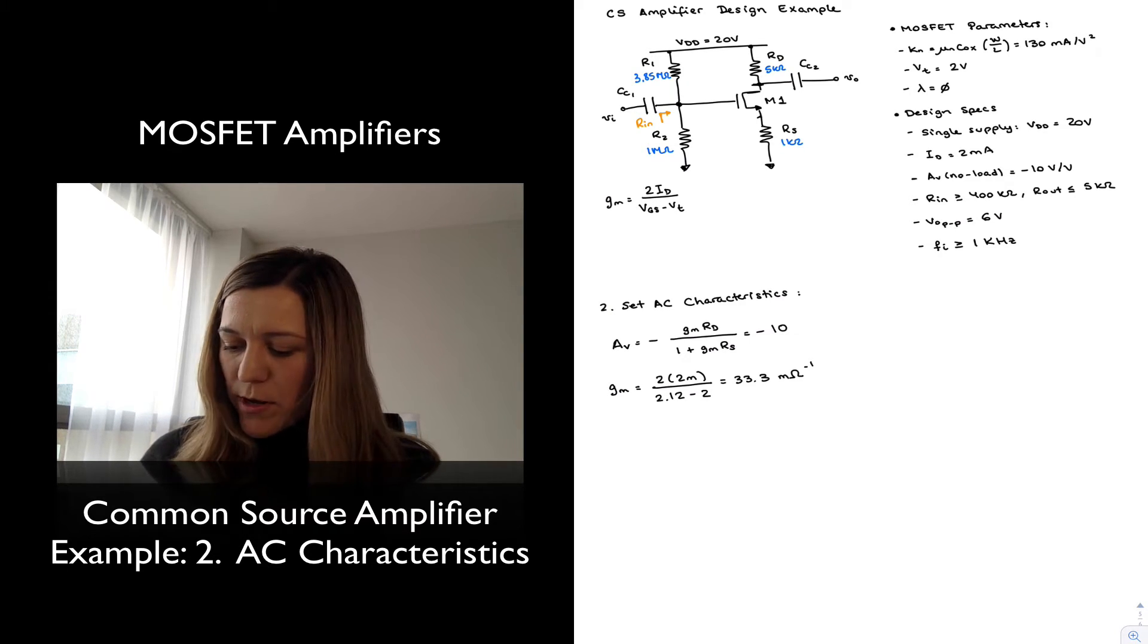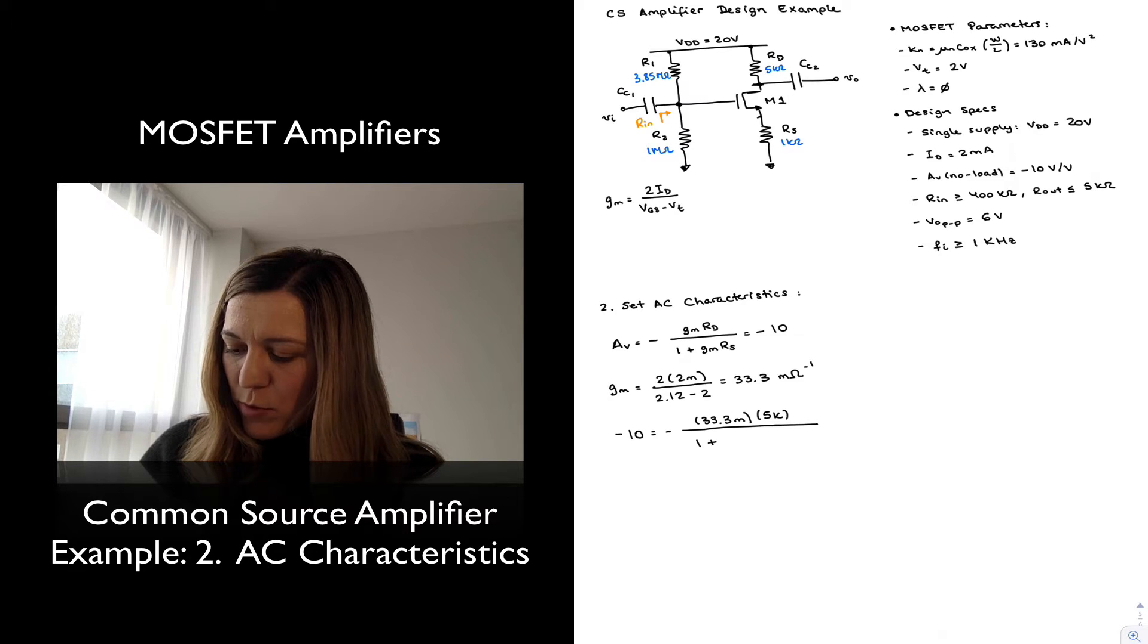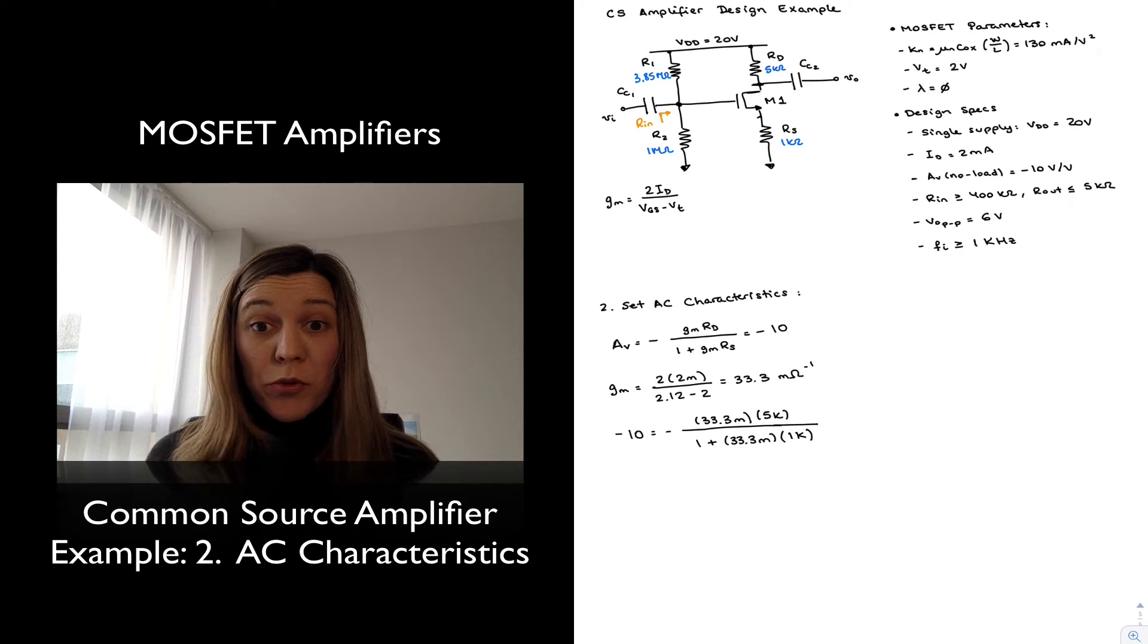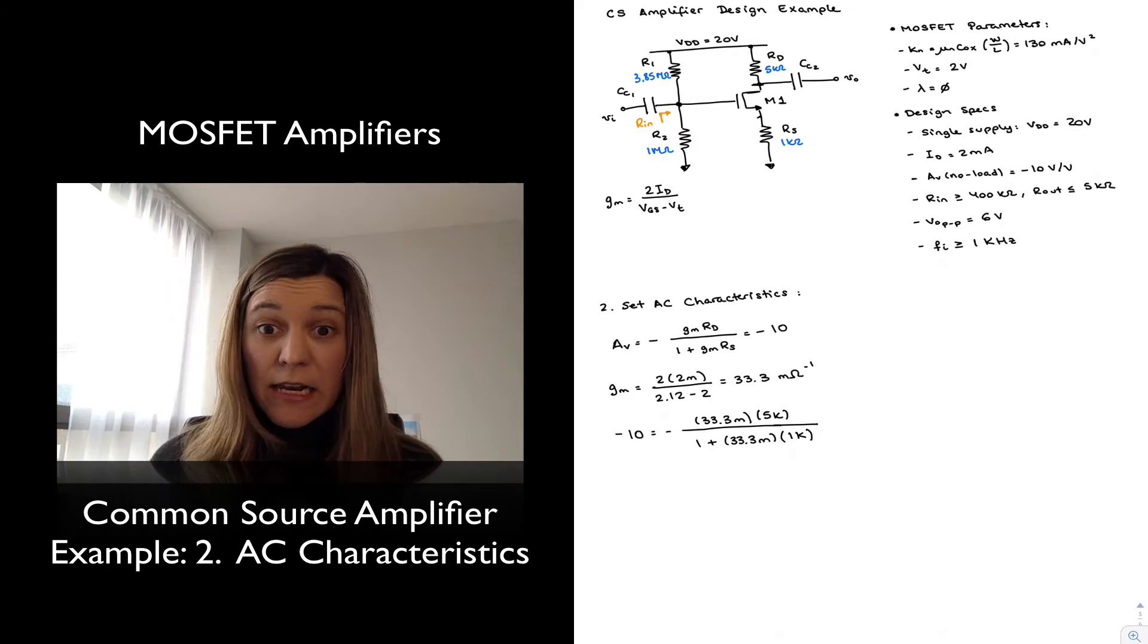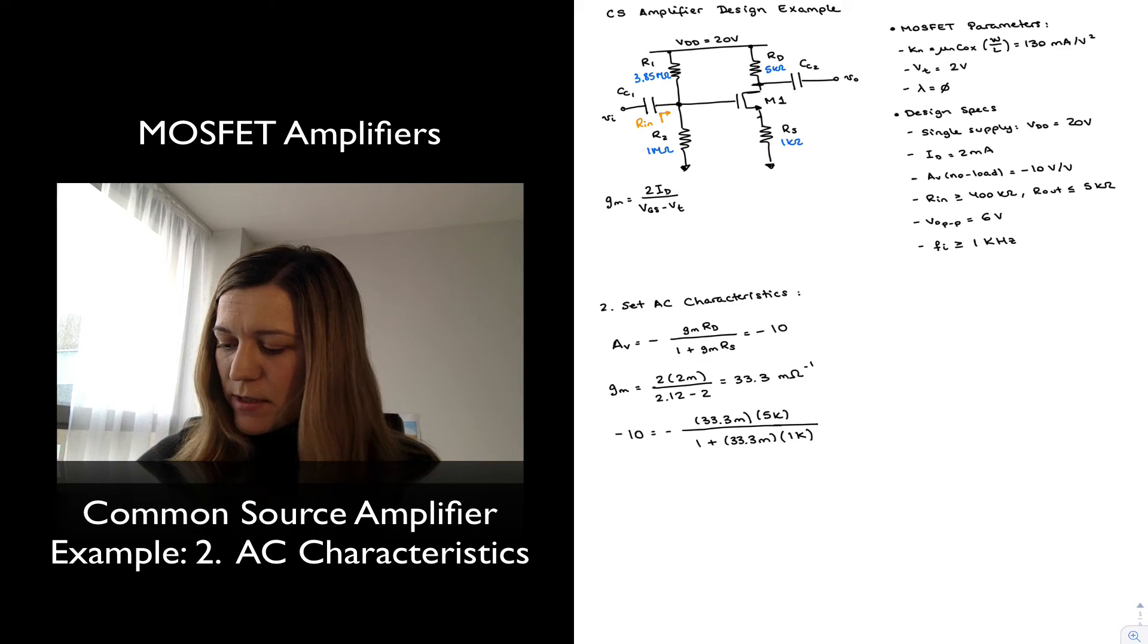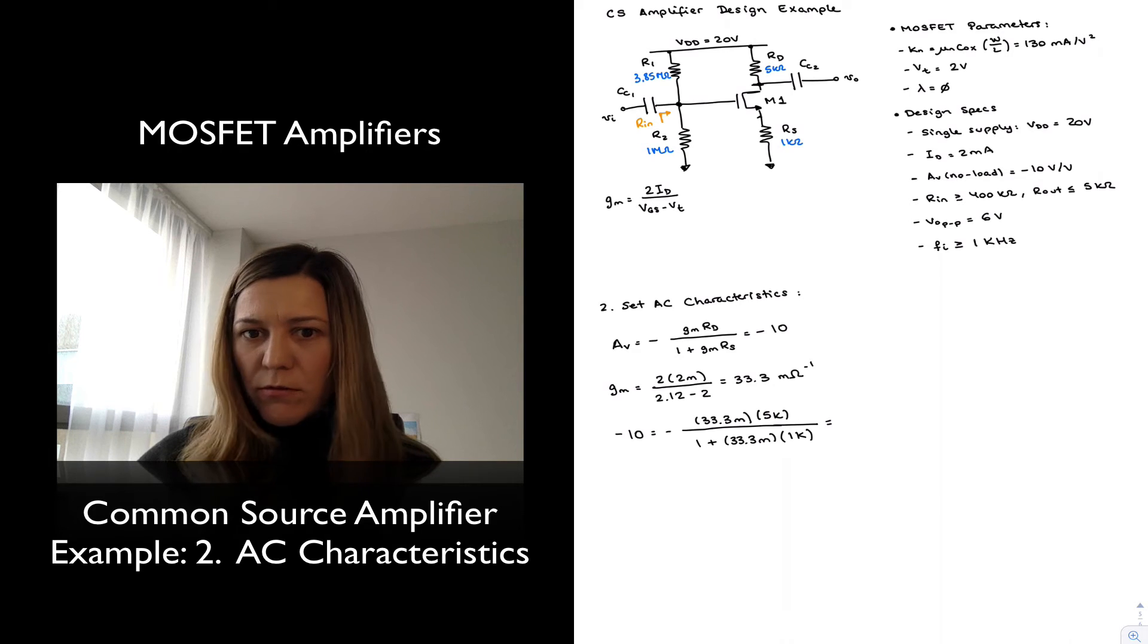And so I can rewrite my expression for the gain. The negative 10 is equal to negative GM is 33.3 millie times RD, which is 5k divided by 1 plus 33.3 millie times RS, which is 1k. Now, when I compute this expression, I'll see that I don't get negative 10. In fact, what I get when I compute that expression is that this is equal to negative 4.85.